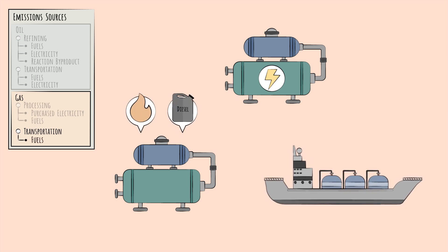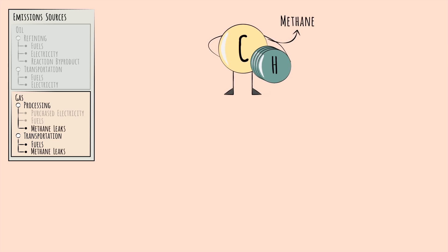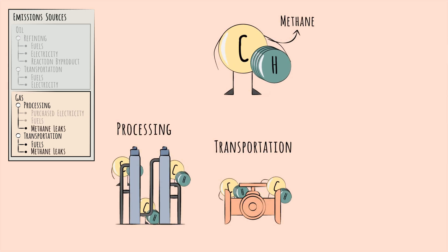Another important source of emissions in natural gas is the natural gas itself—methane, which leaks across the gas value chain from processing to transportation. Methane leaks do also happen in oil refineries, but to a lesser extent.